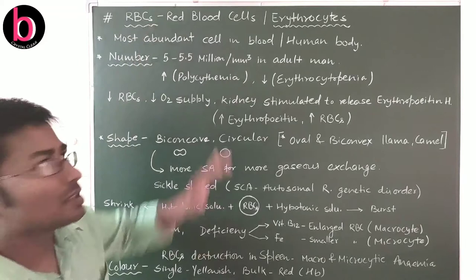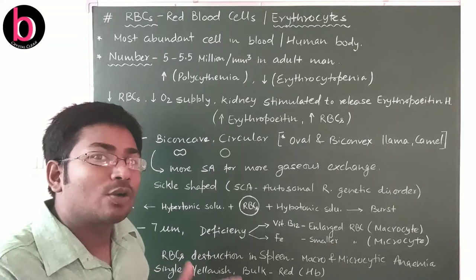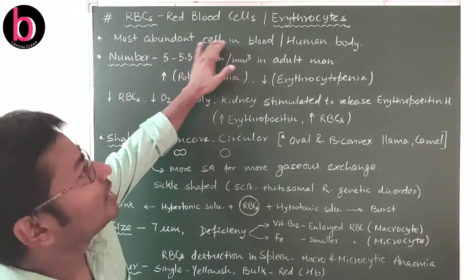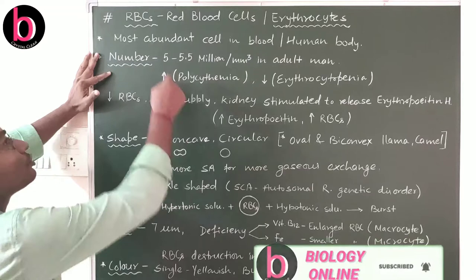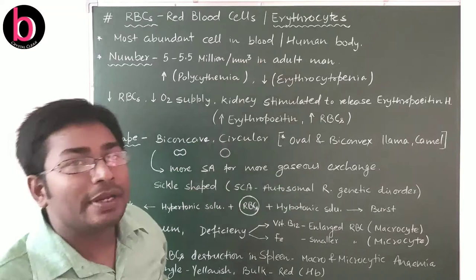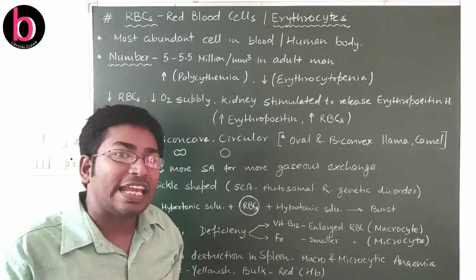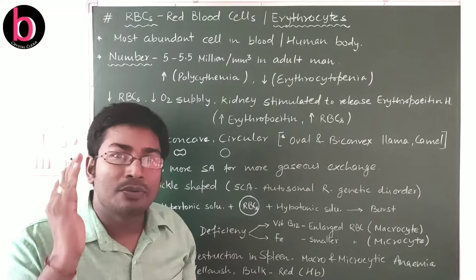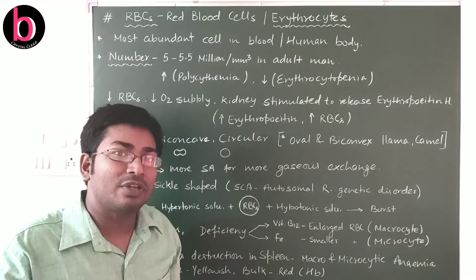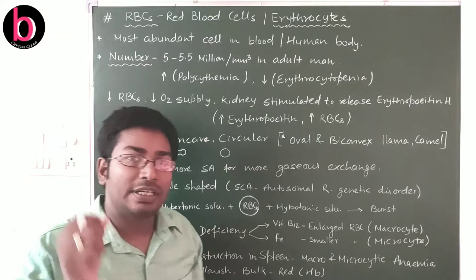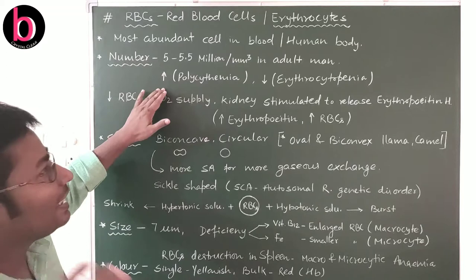Red blood cells or erythrocytes are the most abundant cells not only in blood but in the human body. In an adult male, the count is 5 to 5.5 million per cubic millimeter. In females, the number is slightly less — 4.5 to 5 million per cubic millimeter — due to menstruation, which involves blood loss and comparatively fewer RBCs.